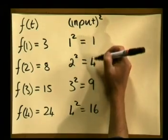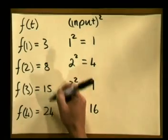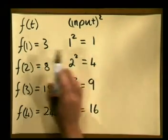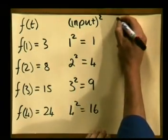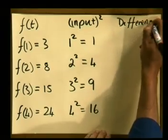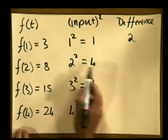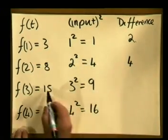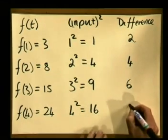Obviously there is more to this relationship than just squaring, because these squared values are not the same as the required outputs. Let's look at the difference between each squared value and the required output. The differences are: 3 − 1 = 2, 8 − 4 = 4, 15 − 9 = 6, and 24 − 16 = 8.